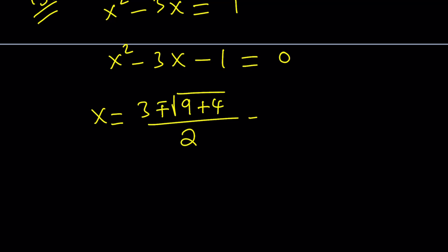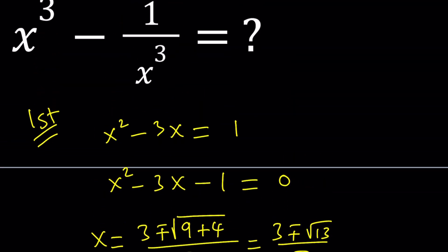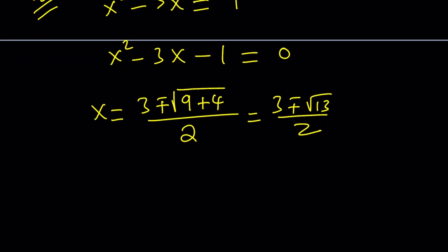That's going to be 3 plus minus square root of 13 divided by 2. Now, there are two x values which I can use, and does it matter which one I use? That's a good question. Let's go ahead and use the one with the plus sign. So 3 plus root 13 divided by 2. And we're going to go ahead and plug this in.